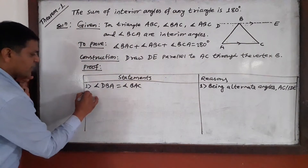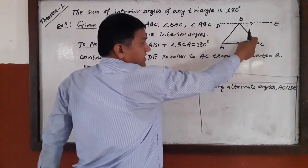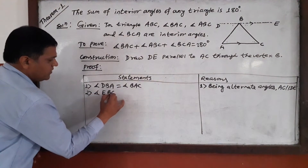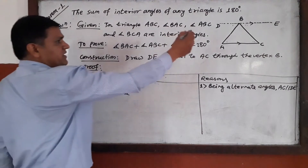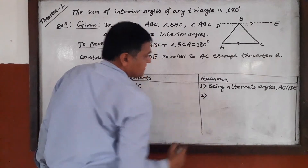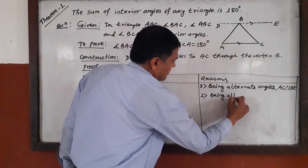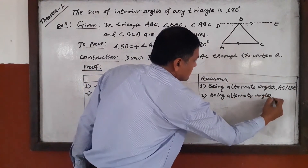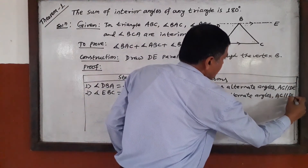Similarly, Statement 2: angle EBC equals angle BCA. The reason is the same — being alternate angles, with AC parallel to DE.